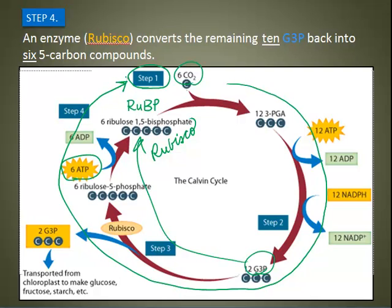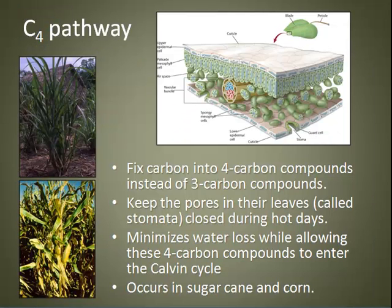Plant species that fix carbon exclusively through the Calvin cycle are known as C3 plants, because they fix carbon into three-carbon molecules — our PGA had three carbons. But that's not the only way that plants can do this. Two alternative pathways for carbon dioxide fixation are the C4 pathway and the CAM pathway.